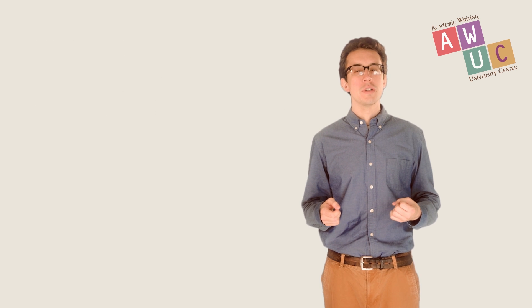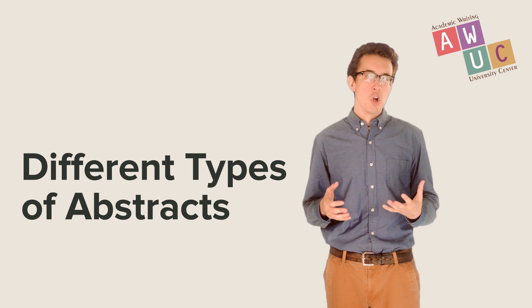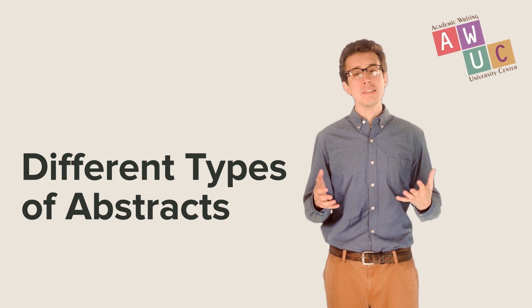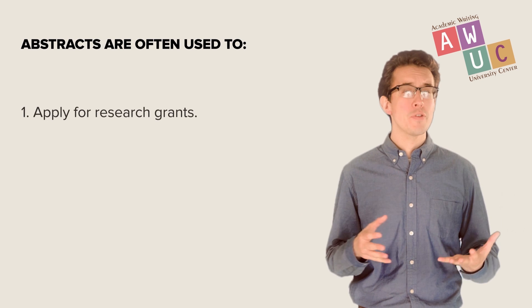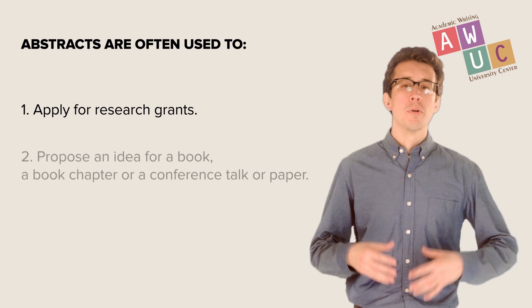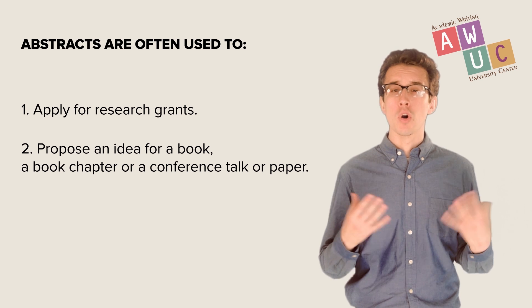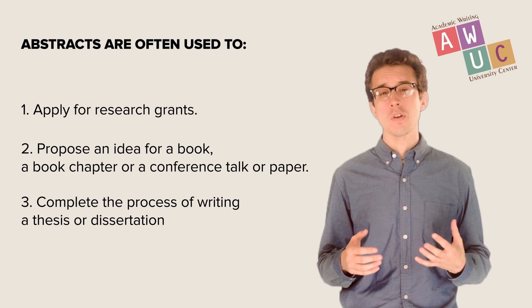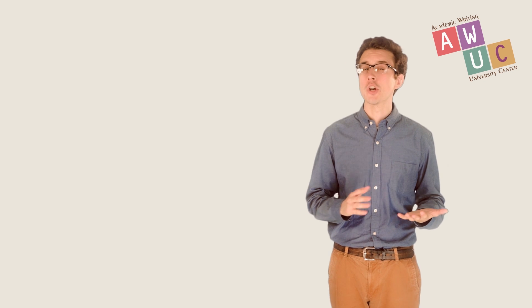Part 2: Different Types of Abstracts. When we talk about abstracts, we often use the word to refer to a kind of writing used for a concise overview of a wide variety of different kinds of texts. Abstracts are often used to apply for research grants, propose an idea for a book, a book chapter, a conference talk or a conference paper, or complete the process of writing a thesis or dissertation. One of the most common forms of abstract is that of the journal abstract.